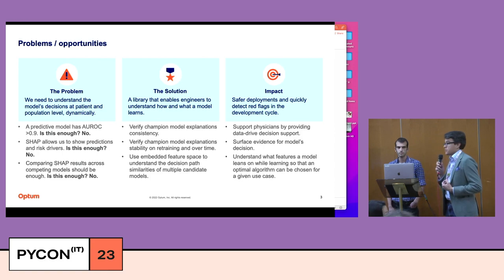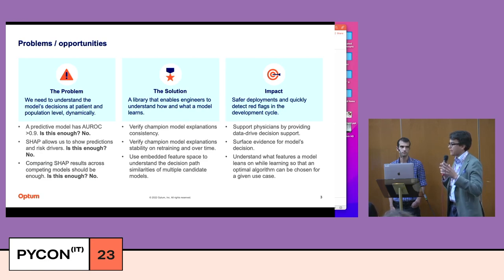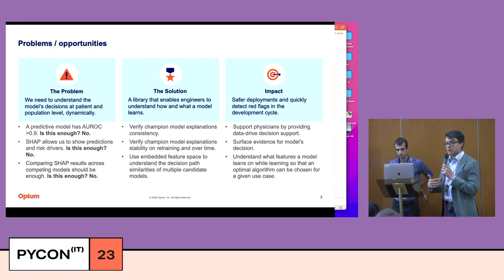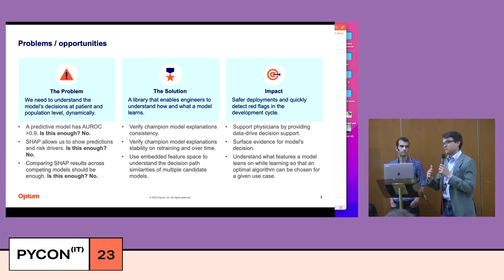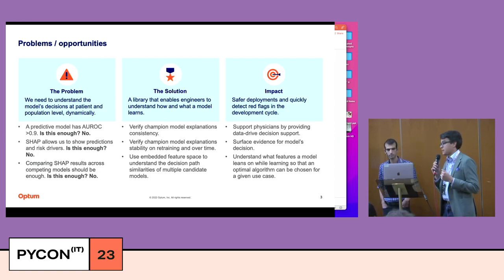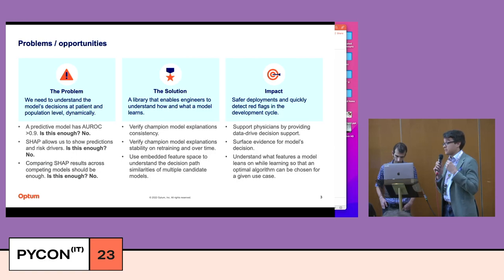What we're aiming to achieve was providing clinicians with a likelihood for progression — that's the main objective — but also what drives each prediction: which features are contributing to a high or low risk score, in what quantity, and whether they drive towards higher or lower risk. To be fully compliant with regulations, we also need to surface what the algorithm is learning, how it's learning it, using visualization tools that clinicians can use.